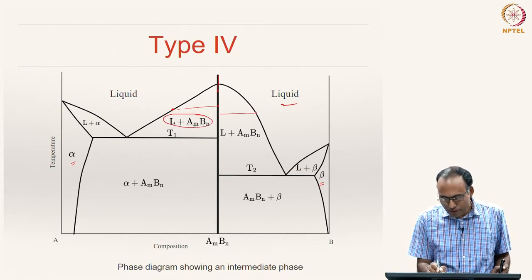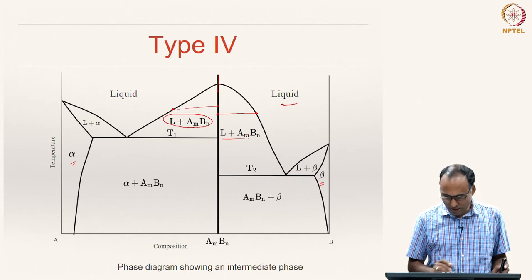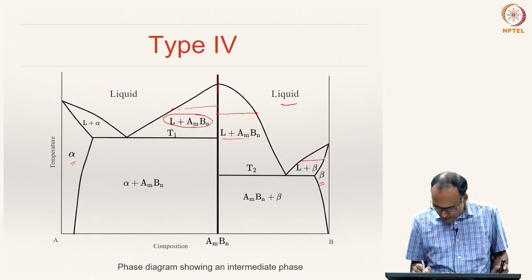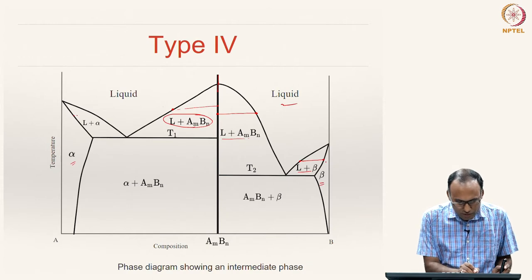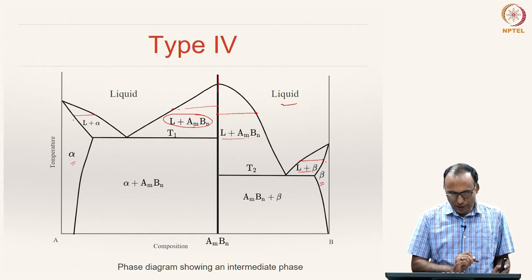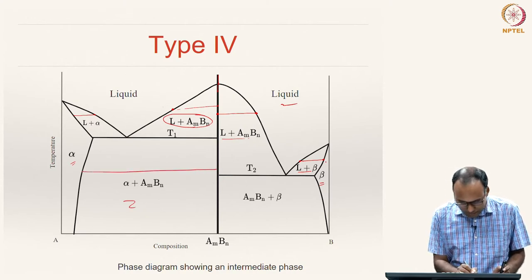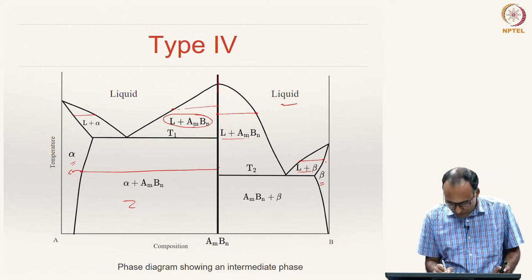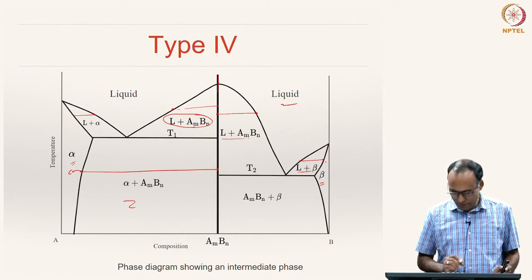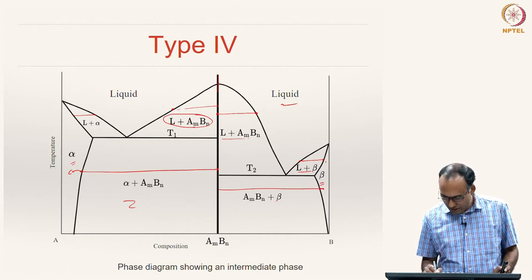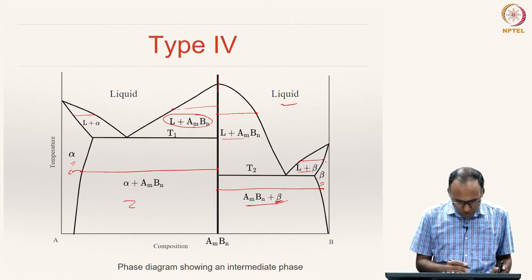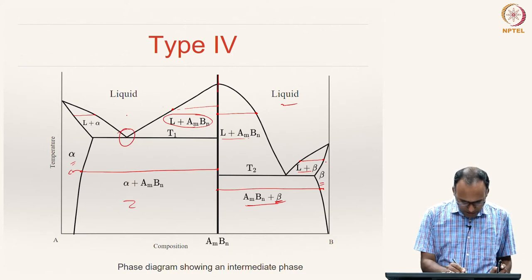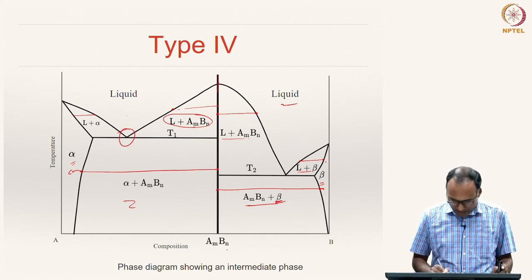Similarly, drawing a tie line on the right portion gives liquid plus A_M B_N as well. Further right, the tie line hits the beta region and the liquid region, so that two-phase region is liquid plus beta. On the far left a tie line gives liquid plus alpha. In the lower regions, a tie line gives alpha plus A_M B_N on the left side, and A_M B_N plus beta on the right side. You can also observe that this system has two eutectic points: one between A and A_M B_N, and one between A_M B_N and B.